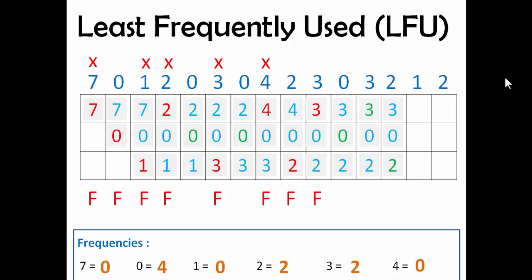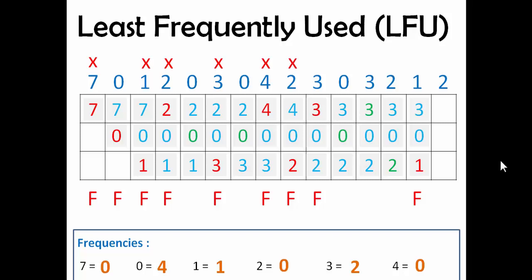The next page is 1, which is not present in the page frame buffer. We check 3, 0, and 2's frequencies — 0 has the highest frequency at 4, and 2 and 3 both have frequency 2. Checking left to right, 2 came first, so we remove 2 and add 1. 0 and 3 will remain there. There will be a page fault. 1's frequency will increase, 2's frequency will get reset, and we put a cross over 2. Make sure you are putting crosses correctly so you trace it correctly.